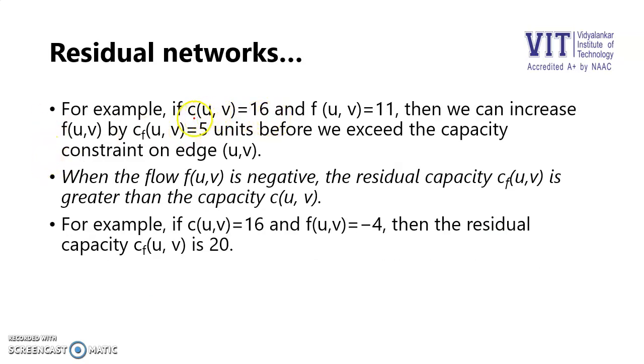For example, if c(u,v) = 16 and f(u,v) = 11, then we can increase the flow by 5 units before we exceed the capacity constraint on edge (u,v). But when the flow f(u,v) is negative, the residual capacity is greater than the actual capacity. If my capacity is 16 and flow is -4, then it is 16 minus (-4), which gives me 20. So my residual network will have capacity of 20.